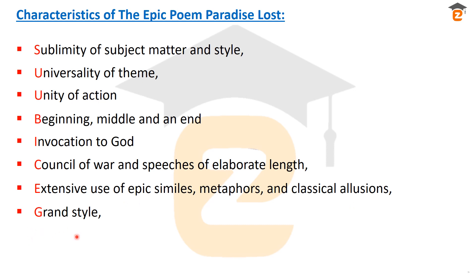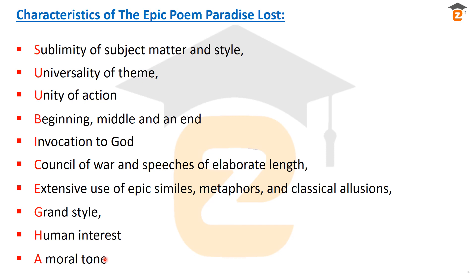It also has grand style, as befits an epic poem, and Paradise Lost certainly has a grand style. Human interest is another characteristic — Milton is talking about human interest: don't disobey God's orders, don't go against God, as happened with Eve and Adam. And moral tone — the story about how Adam and Eve suffered greatly after being expelled from heaven, with the moral being to obey God's orders. These were the main important characteristics of this poem, Paradise Lost.